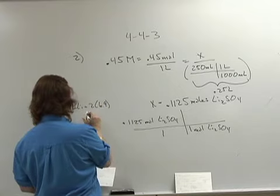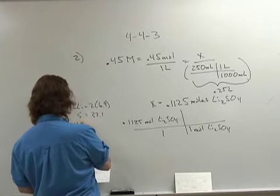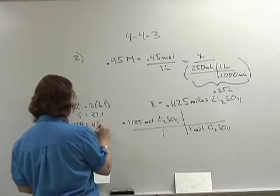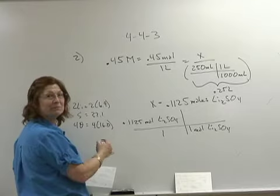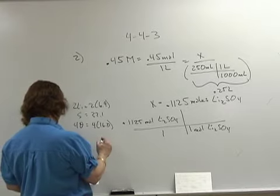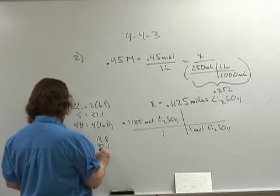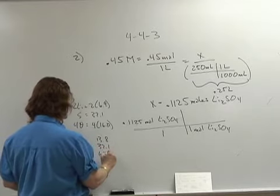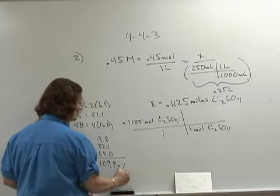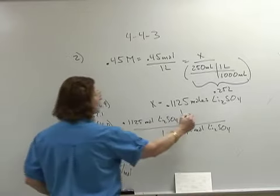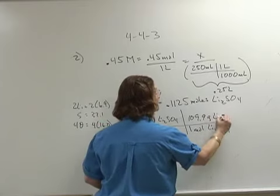I have sulfur which is 32.1, and 4 oxygens which is 4 times 16.0. Then I need to do this math. I have 13.8, 32.1, and 64.0. I add them and I get 109.9 grams per mole of the lithium sulfate.